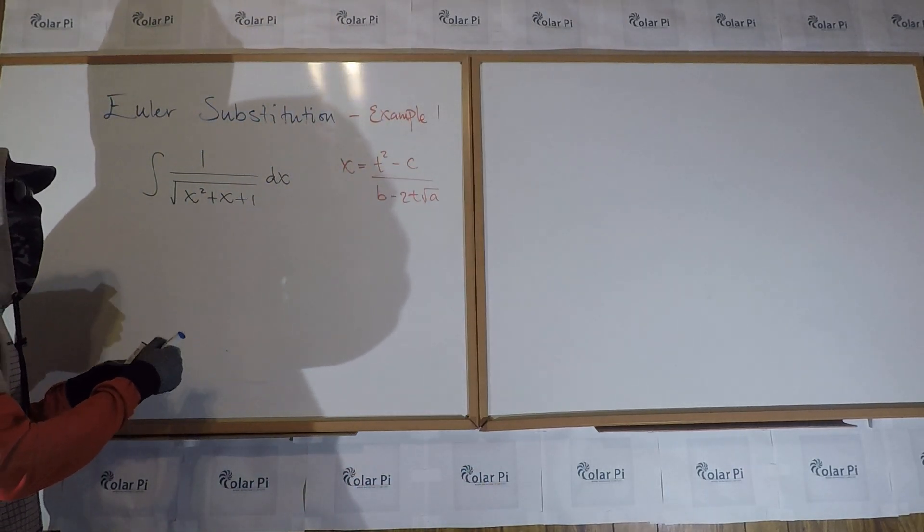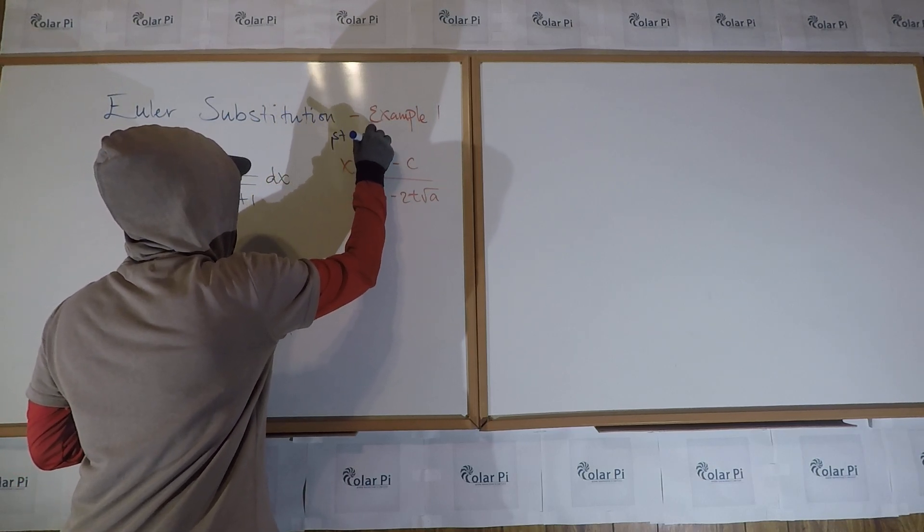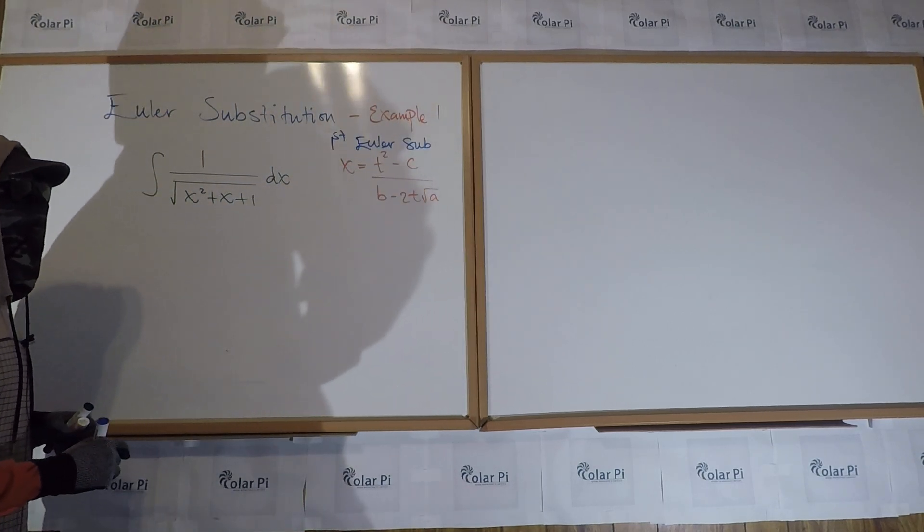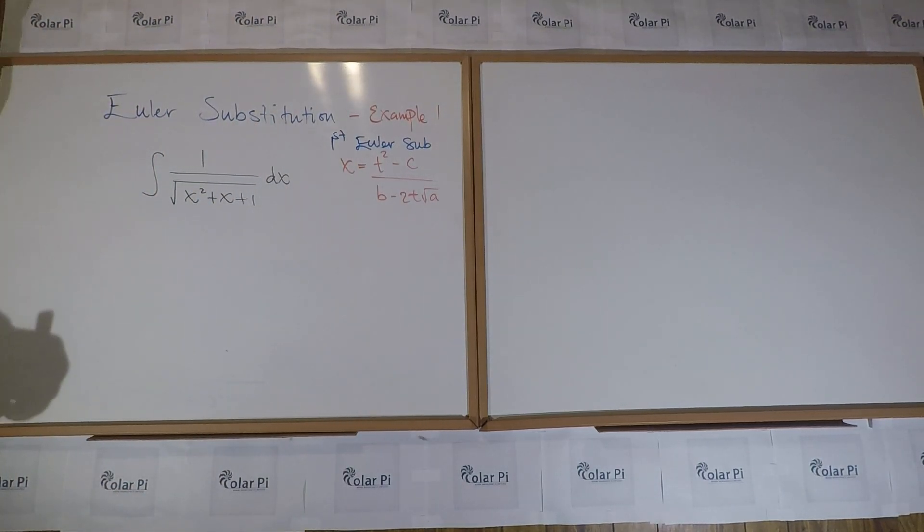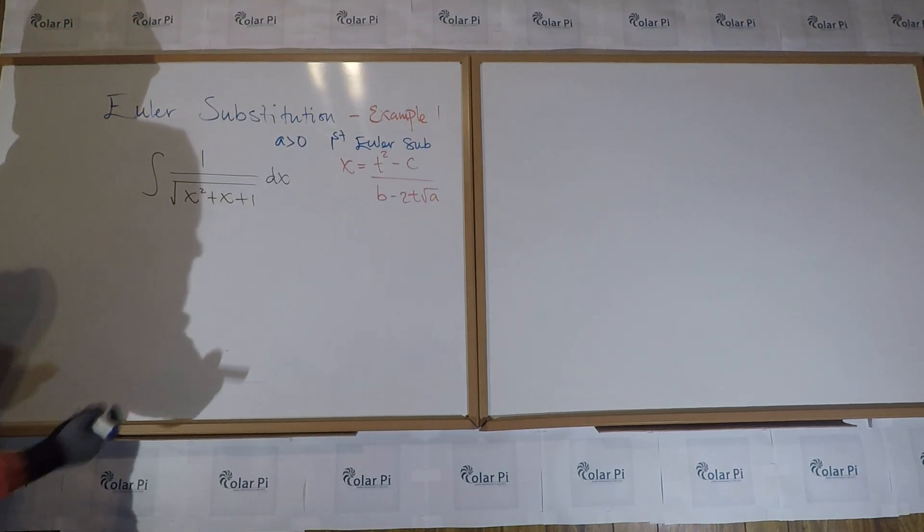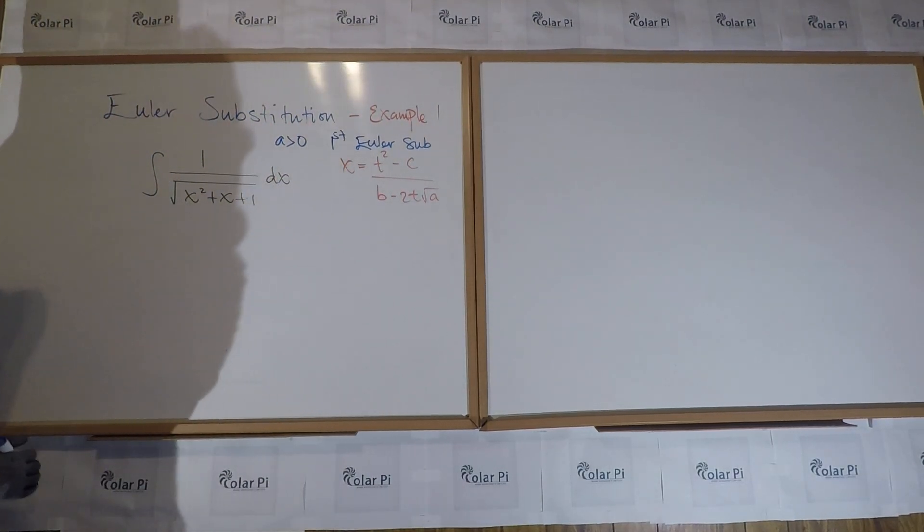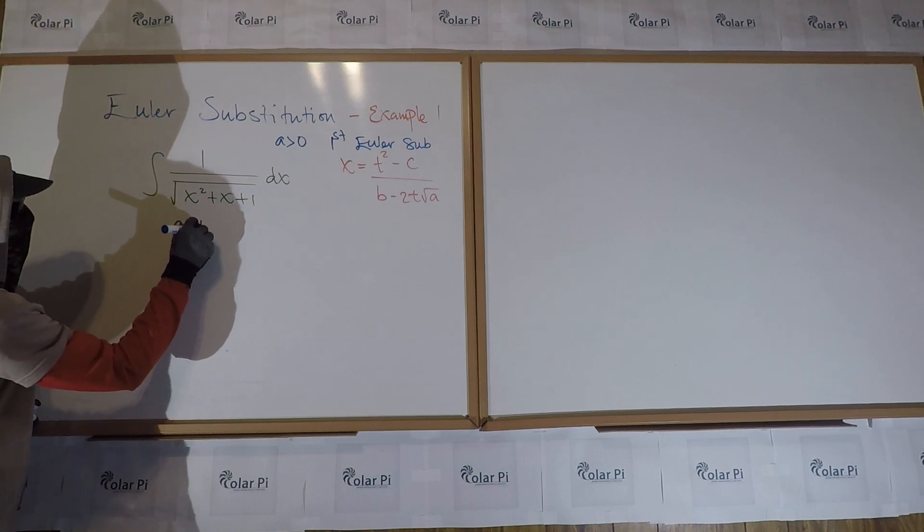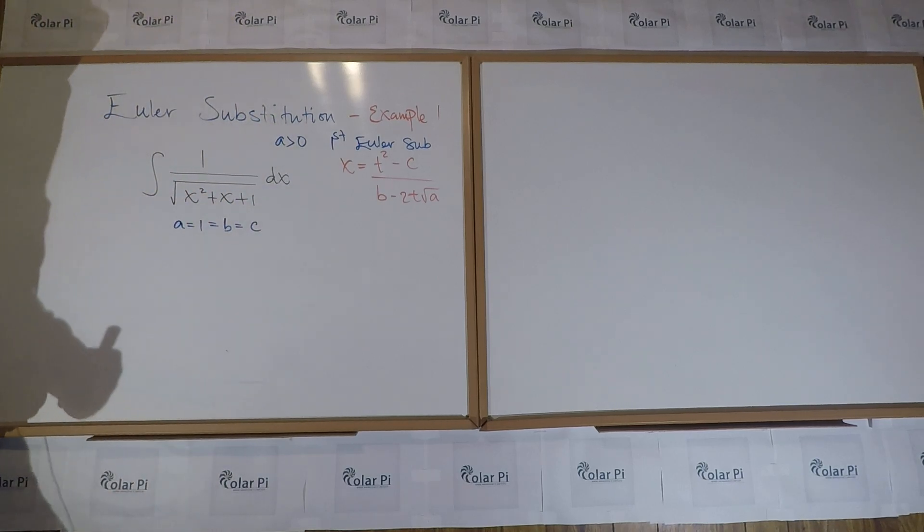So this is the first Euler substitution. And there we derived that X needed to be this in the case of the first Euler substitution, which is when A is greater than zero in the quadratic. We're going to begin with this as we should. So we look at our quadratic inside the square root and we see that A is equal to one, which is equal to B, which is equal to C.